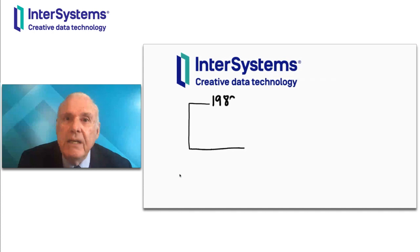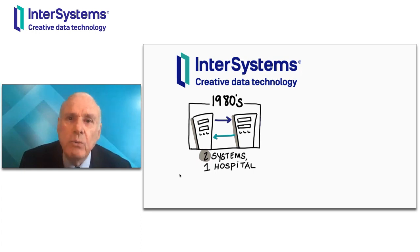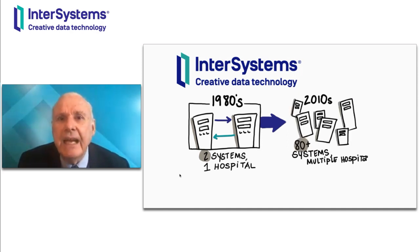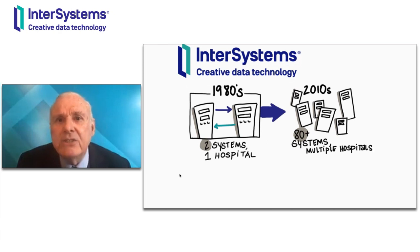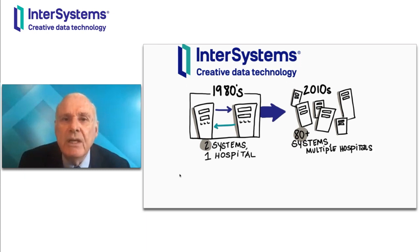I'm going to start by going back to the 1980s when interoperability in healthcare really started. It started because hospitals began to have more than one system within their walls and they had to connect those systems. Fast forward to the current time, the average hospital in the U.S. has over 80 IT systems within its walls. And with the consolidation of hospitals, many systems now have multiple hospitals but still need to connect all those systems.